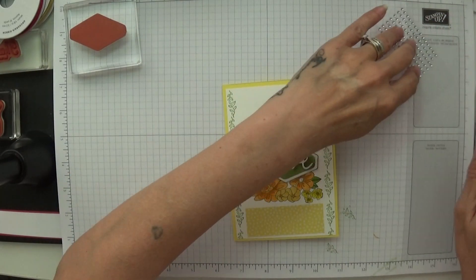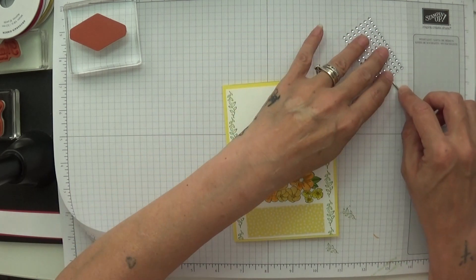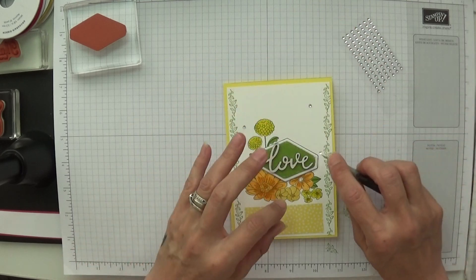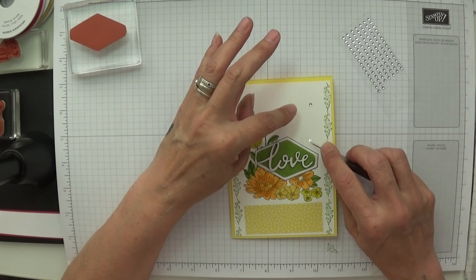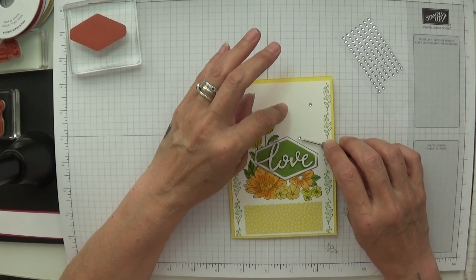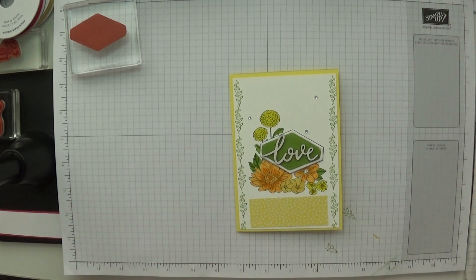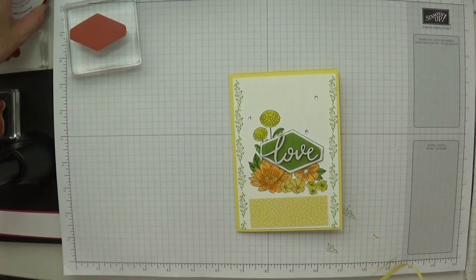So I'm going to decorate now the top half of this card with rhinestones. I was going to put one there, but I'm just going to put one about there. I love this.